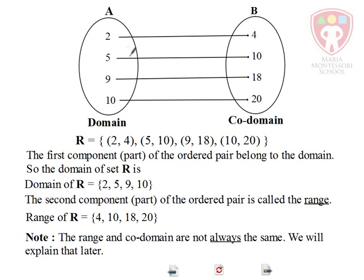So here, set A is called the domain. And the second set is called the co-domain. And the numbers here have got special names. Let's go over that. All of the first component, meaning the first numbers that appear on this first set on the left, belong to the domain of the set R. So the domain of R equals all the numbers you find in the first set, in this case 2, 5, 9, and 10.